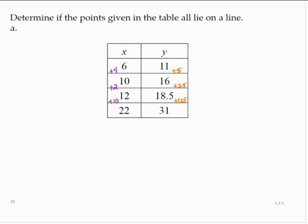Calculating the ratio between the first two points, we would have that the slope is 5 over 4, or as a decimal, 1.25. Here we have m equals 2.5 over 2, or as a decimal, 1.25.